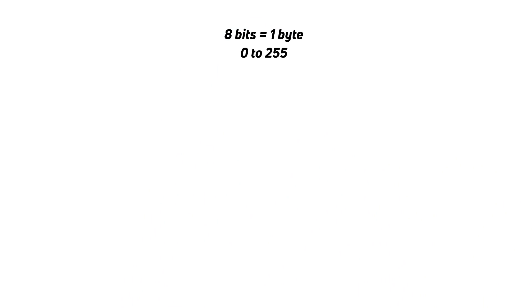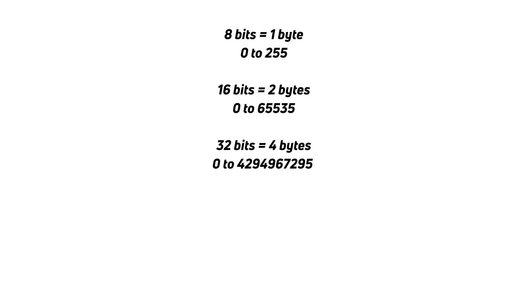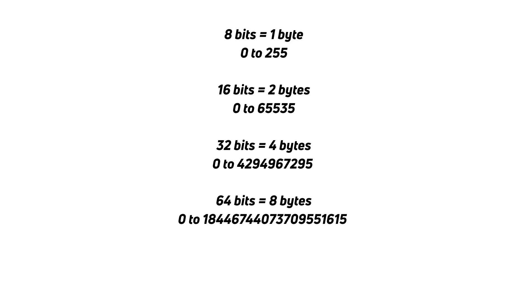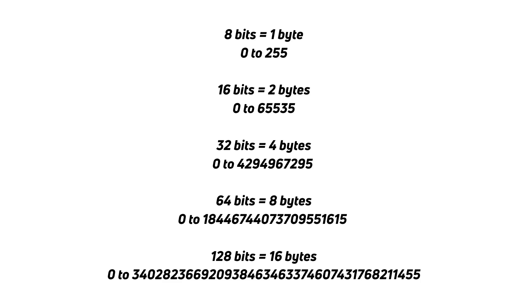If you want to find out more about 8-bit numbers and 16-bit numbers and so on, I do have a video dealing with those on this channel and I'll leave a link in the description below. A byte is an 8-bit number, then after that we have 16-bit numbers which are 2 bytes, 32-bit numbers which are 4 bytes, and modern computers use 64-bit numbers which are 8 bytes. But we don't hear about 128-bit computers — or do we?